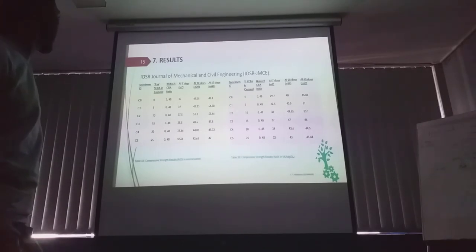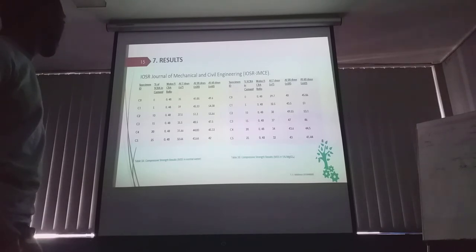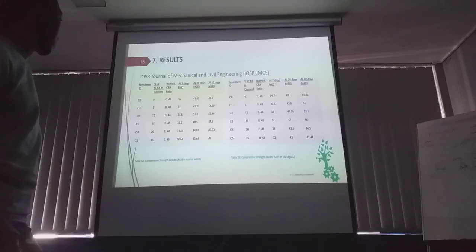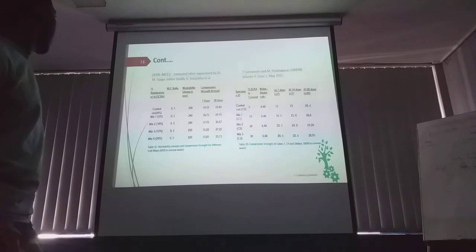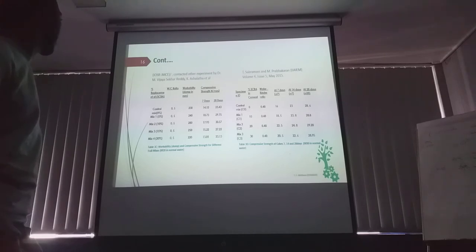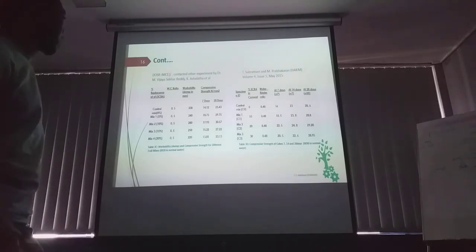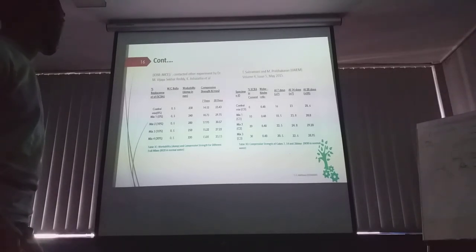These are the results obtained. As shown in figure 3 and table 3A, compressive strength results in normal water for M35, and compressive strength results in 5% magnesium sulfate solution at 35 MPa. This also shows the workability slump values ranging from 230mm to 280mm, and compressive strength of cubes at 7, 14, and 28 days in M30 in normal water.